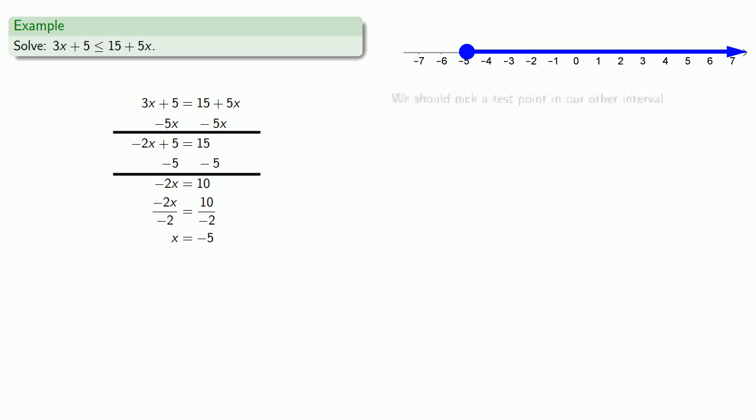Now we have two intervals, so we do need to pick a test point in the other interval. And, while we might mess around with numbers like negative 6, negative 7, a useful idea when dealing with inequalities is the following: go big or go home. Well, actually if you're watching this, there's a reasonable chance that you're already home, so go big.